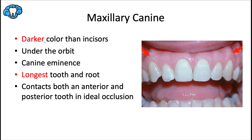Starting with some fast facts: canines are usually darker in color than the incisors — typically at least one full shade darker. Technically, they have a lower value than neighboring anterior teeth. They're located underneath the orbit, so sometimes they're called 'eye teeth.' Since they're located at the corners of the dental arches, they're important for both aesthetics and occlusion. The canine eminence refers to the prominence on the surface of the maxillary bone caused by the bulky canine root. It's also the longest tooth with the longest root — on average about three centimeters long.